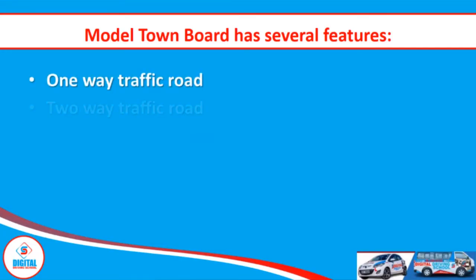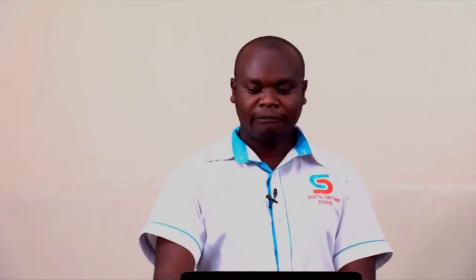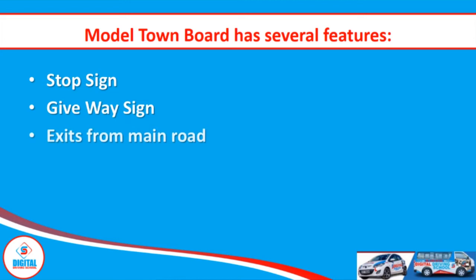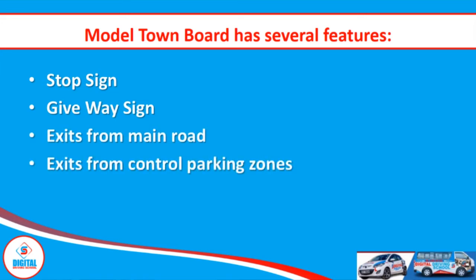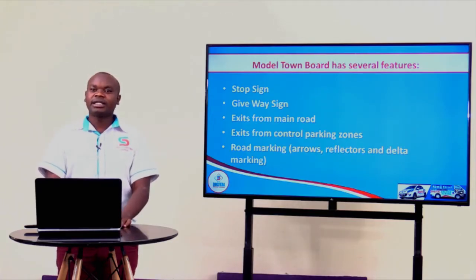First we are going to list them. We have a one-way traffic road, a two-way traffic road, a roundabout, parking zones, yellow cabs, a pedestrian crossing, a stop sign, a giveaway sign, exit from main road, exit from controlled parking zone, and lastly road markings — which are the arrow direction, the reflectors, and the delta marks.